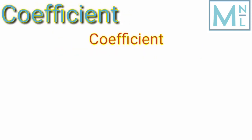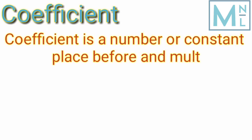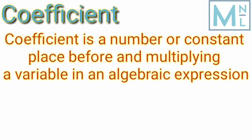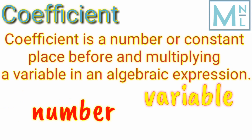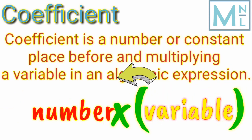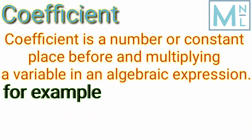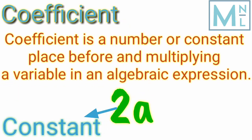What is a coefficient? A coefficient is a number or constant placed before and multiplying a variable in an algebraic expression. It is a number written before the variable and is multiplying the variable.